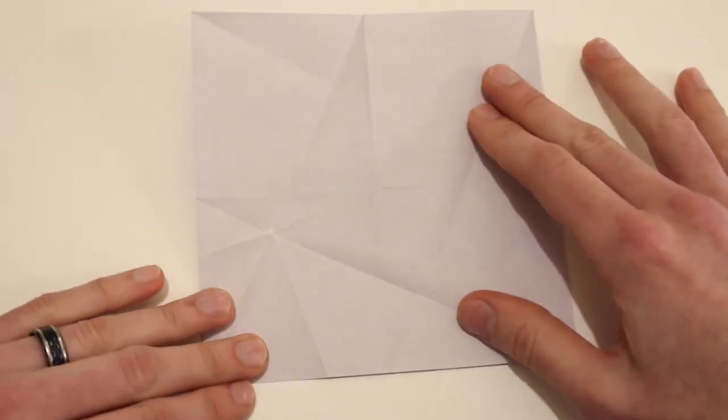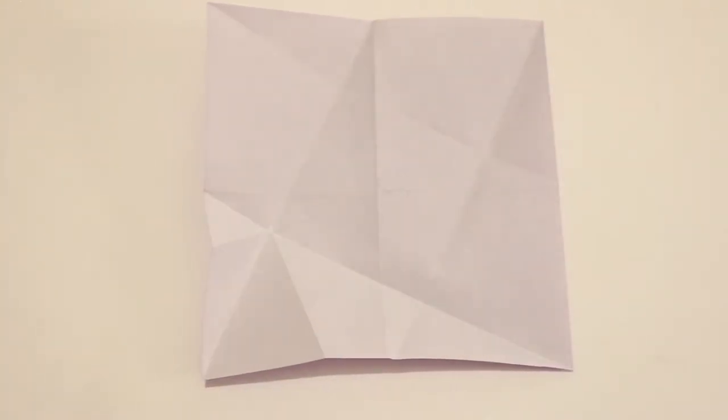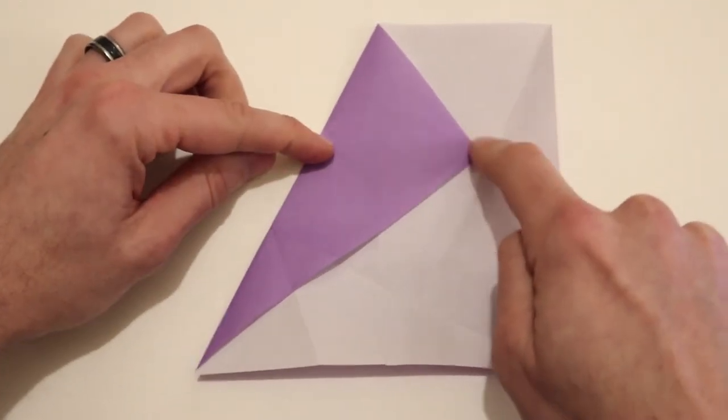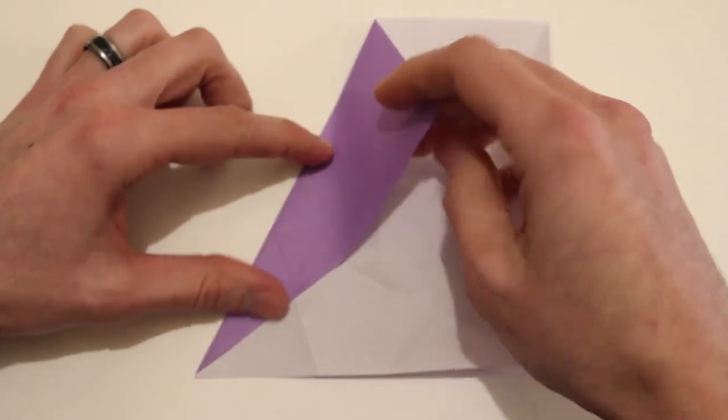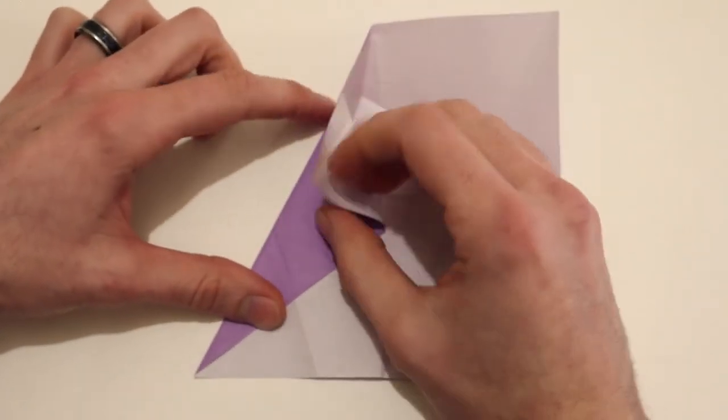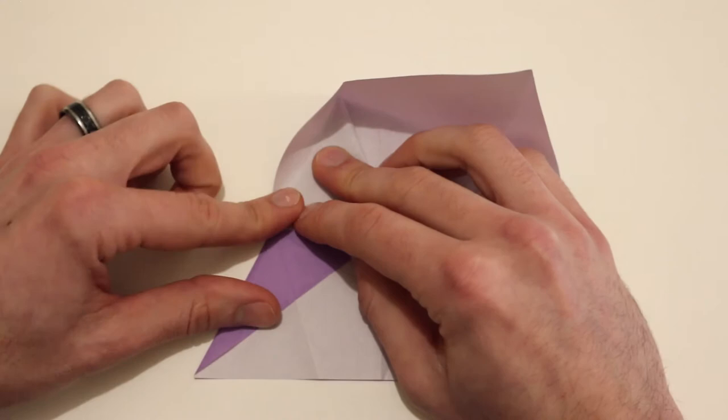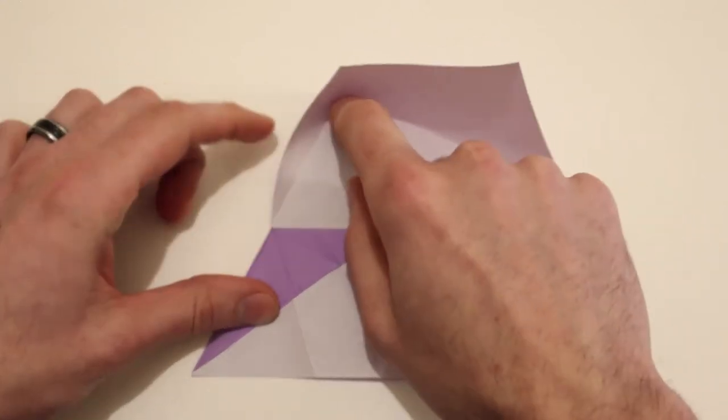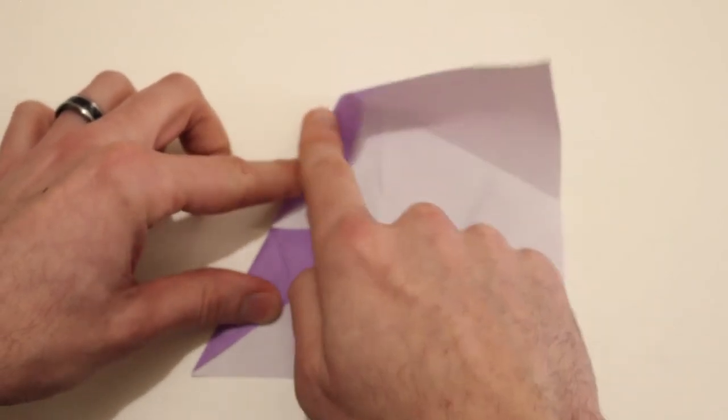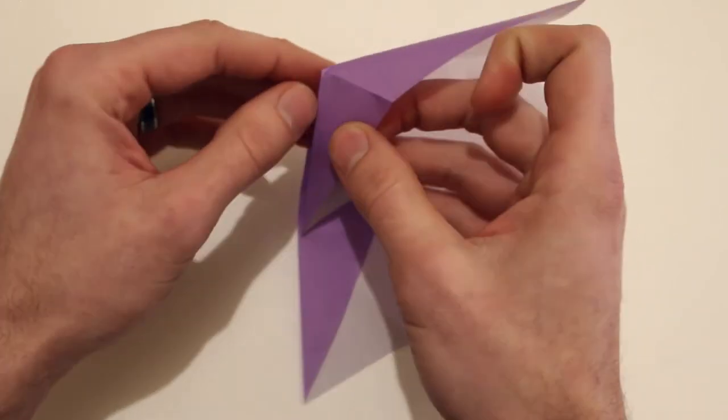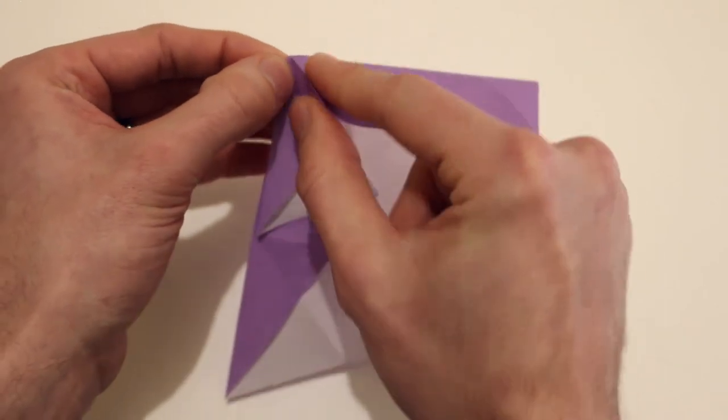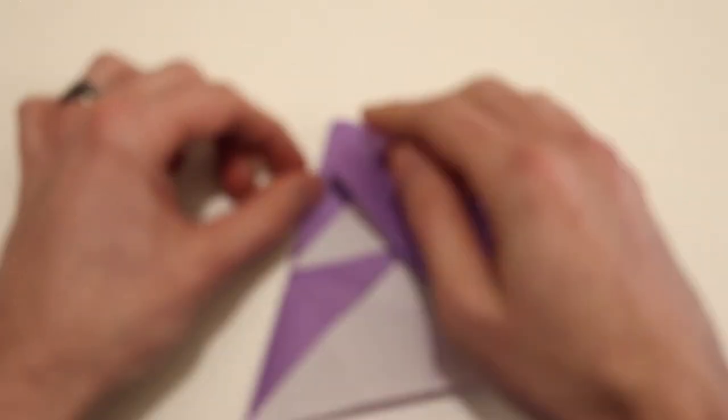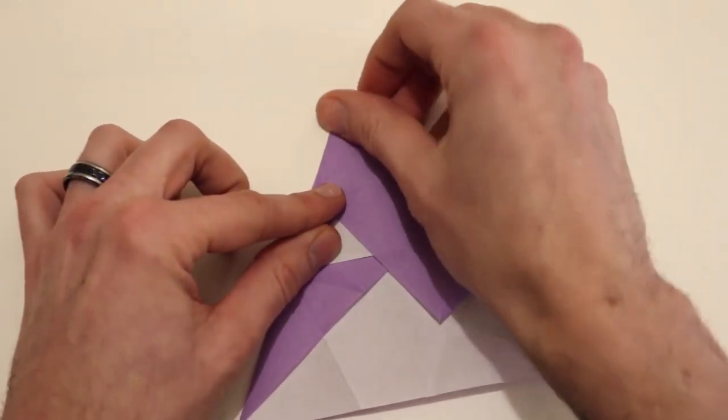Rotate the model 90 degrees and repeat all of those steps here. So we'll form this valley fold and bring this corner out to this edge here where that crease line is. And then crease that. Form this valley fold. And then reform that fold and bring that crease out to the edge.